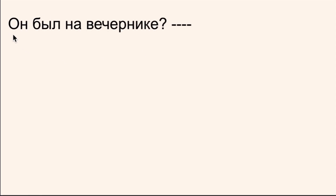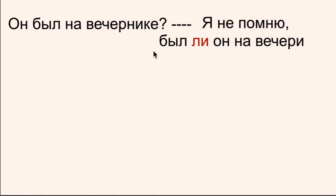I'm going to ask a question in Russian — see how you would respond. Он был на вечеринке? Has he been to the party? Listen to the intonation, because it's very important. I'm wondering whether he has been. So you want to say: Я не помню, был ли он на вечеринке? Был is your first element, and after that, following this verb, comes the particle ли. Был ли он на вечеринке?